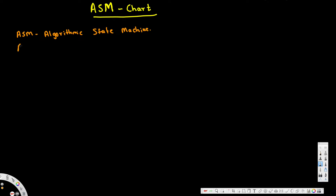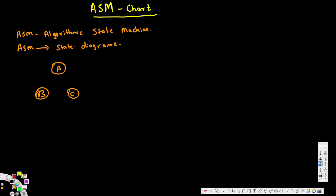ASM is a state machine and it's a state diagram. The state diagram is usually given like this — for example with states A, B, C — and it can have transitions like zero, zero, one, zero, zero, one based on the situation.